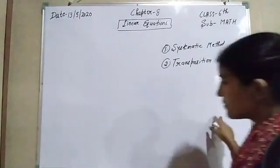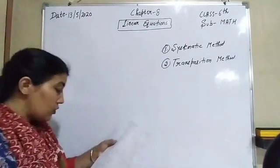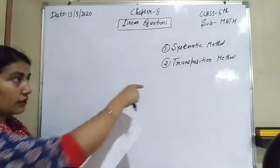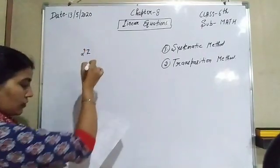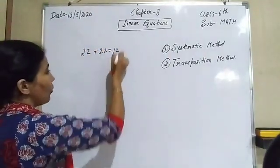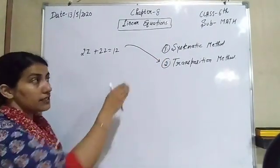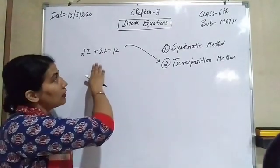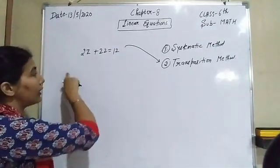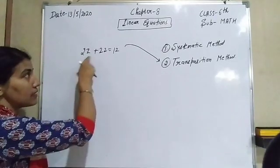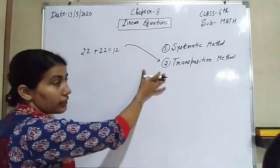Now let's start the next method — solving linear equations using the transposition method. The first question for this method is 2z + 22 = 12. We have to solve this using the transposition method, which is one of the easiest methods. We need to find the value of variable z.